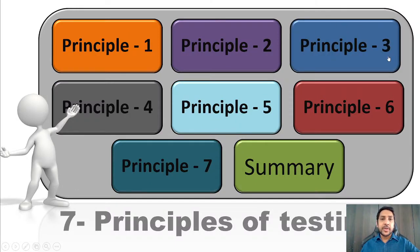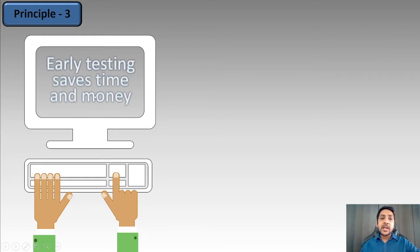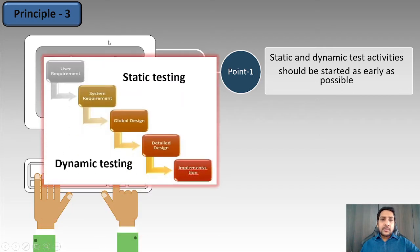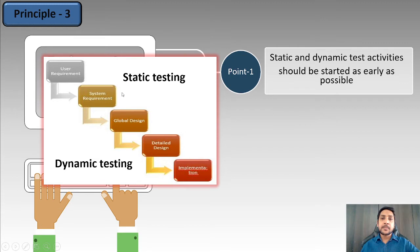Principle number three: Early testing saves time and money. Static and dynamic test activities should be started as early as possible. For example, when we are at the user requirement stage we don't have code yet, but we can perform static testing and reviews on the requirement. As soon as we have the requirement, we start testing the requirement. When we have code at the implementation level, we start dynamic testing — introducing testing techniques as early as possible.